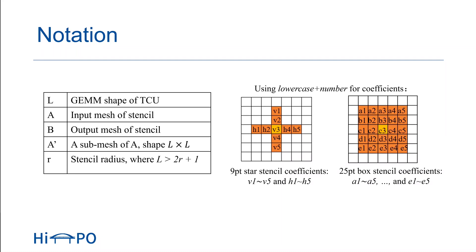For related work: common stencil optimizations include spatial-temporal tiling, streaming, unrolling, and hardware-specific optimizations, which have been explored by many works and stencil frameworks. There are also a few works using tensor core units for stencil computation by transforming stencil computation into algorithms supported on the tensor core unit, such as convolution and sparse matrix multiplication. In this work, it is important to consider the characteristics of stencil computation when using the tensor core unit, and thus it can fully maximize the utilization of the tensor core unit.